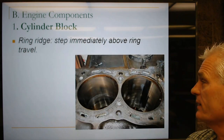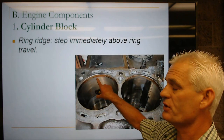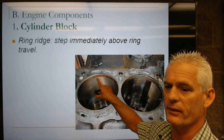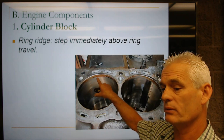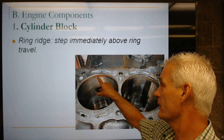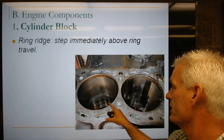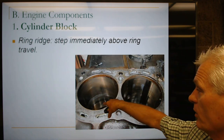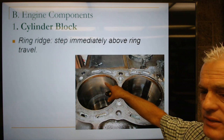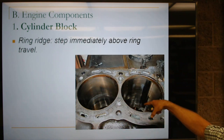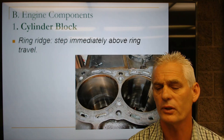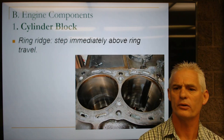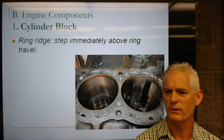The ring ridge is that step where the rings stop — you can see lines up and down the cylinder, and a denser pattern here showing this cylinder had trouble from losing oil and lubrication.